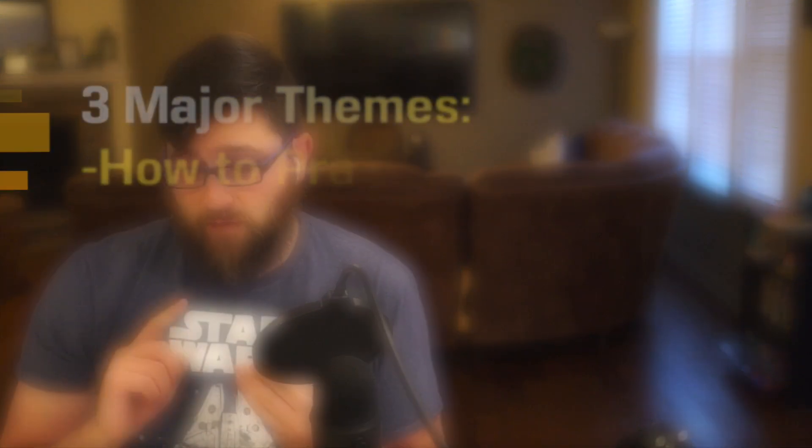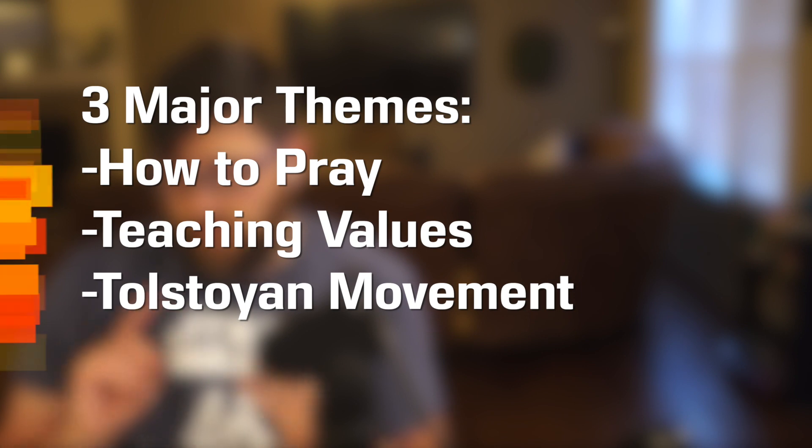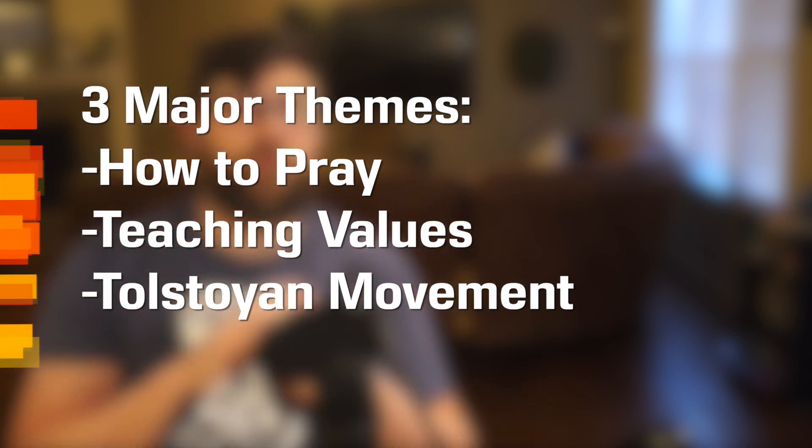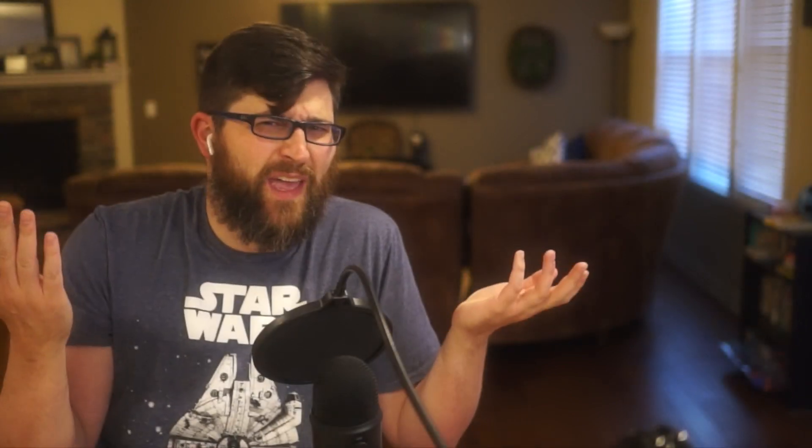In terms of themes, we have prayer — the epigraph asks what's the right way to pray. We have teaching values: can you teach someone to be a good person by teaching them the method first? And we need to talk about the Russian Orthodox Church and the Tolstoyan movement, which is critical. Even if you get the first two points, this context is the whole point of the story.